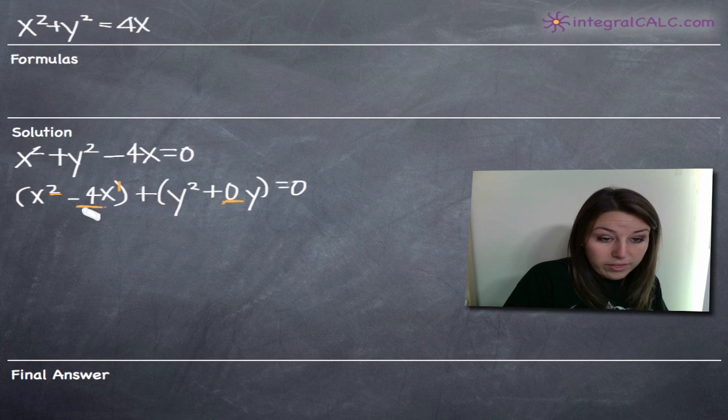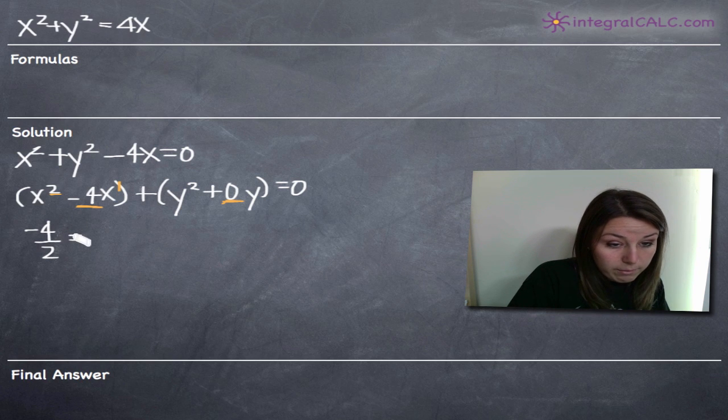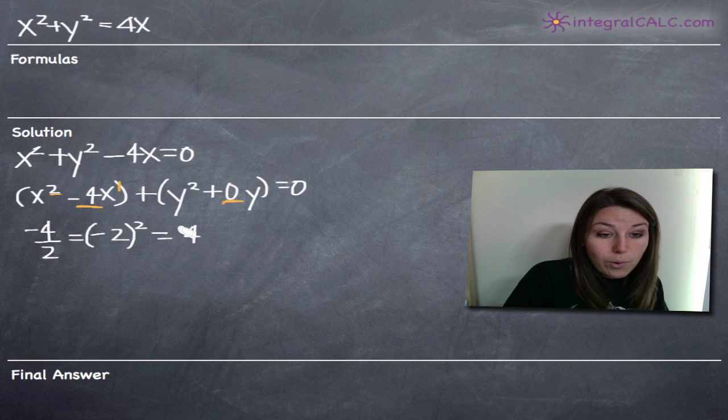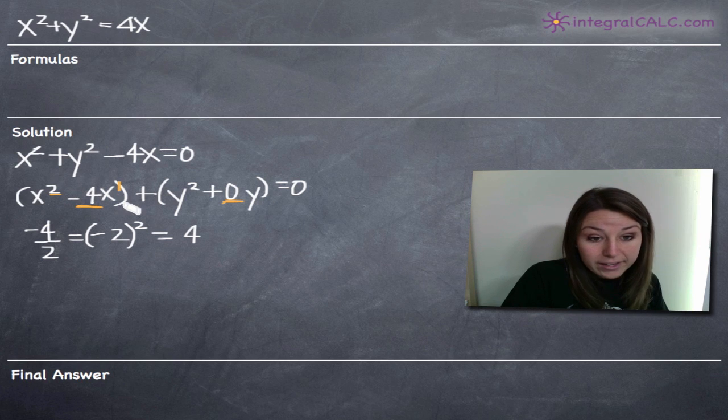Let's start with x. We're going to take negative 4, and we're going to divide it by 2. That's always what we do when we complete the square. So negative 4 divided by 2 gives us a negative 2. Then we're going to take this negative 2 and we're going to square it. So in order to complete the square, divide by 2, then square your answer. Negative 2 squared gives us 4, and 4 will be what we add to both sides of the equation to complete the square in terms of x.